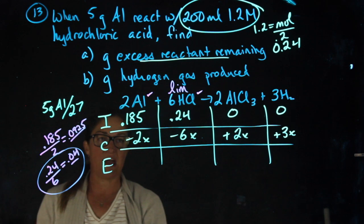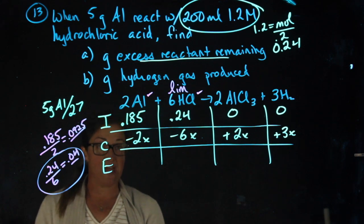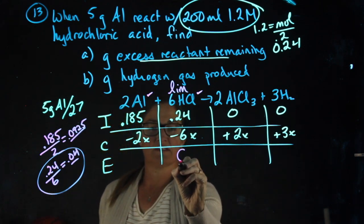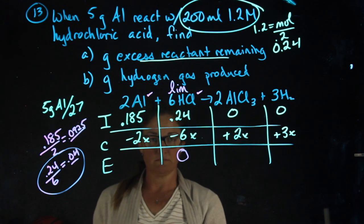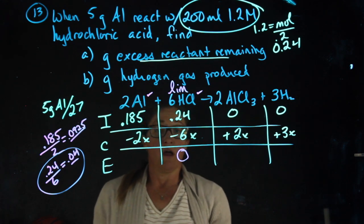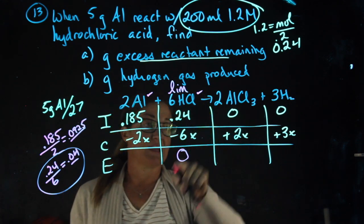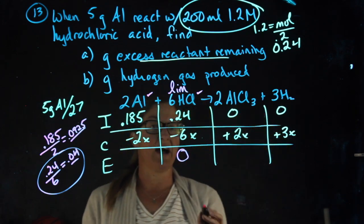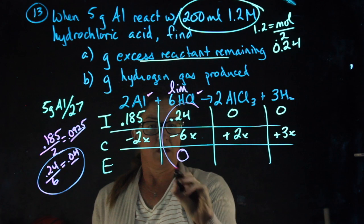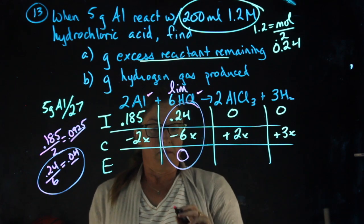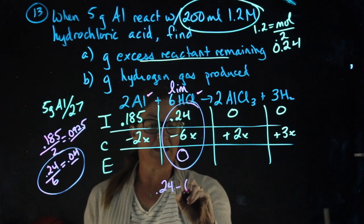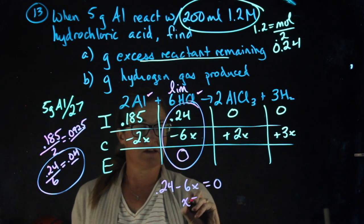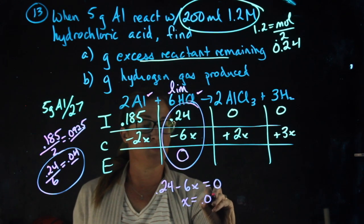In this case, hydrochloric acid is my limiting reactant. Since I know it's limiting, I know that this will go to 0. Now I can solve for what x is. 0.24 minus 6x equals 0. Solving for x, x is 0.04.